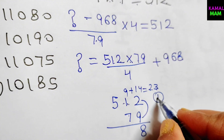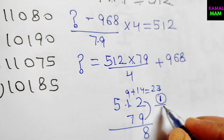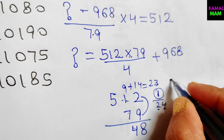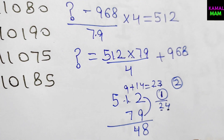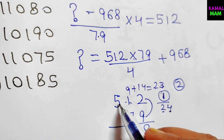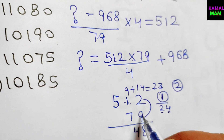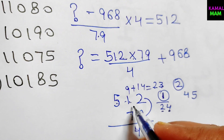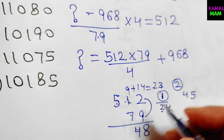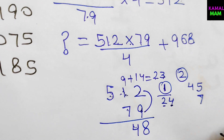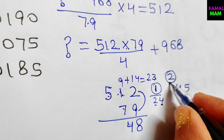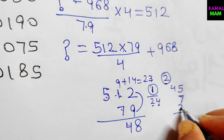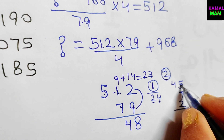Add the carry: 23 plus 1 is 24. Write down 4, carry 2. In the next step, cross-multiply: 5 times 9 is 45, and 1 times 7 is 7. Add the carry of 2: 7 plus 2 is 9, then 9 plus 45 gives us 54. Write down 4, carry 5.